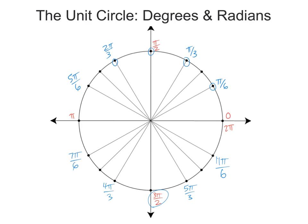And then 2 pi, of course, is 12 pi over 6. So that's counting around by sixths.